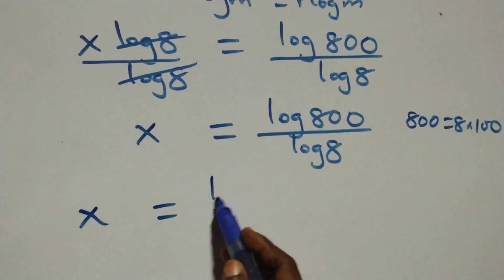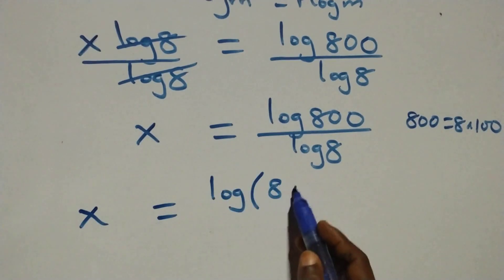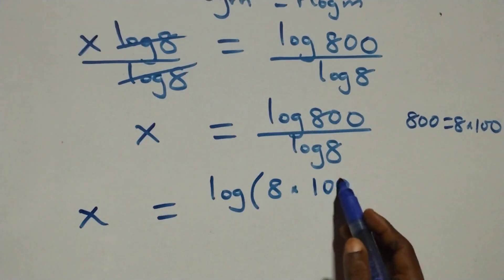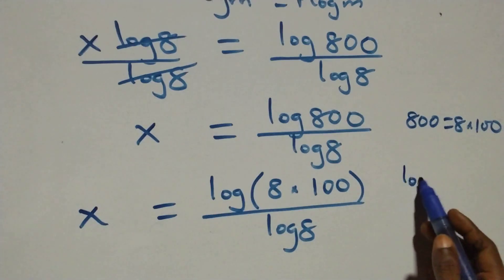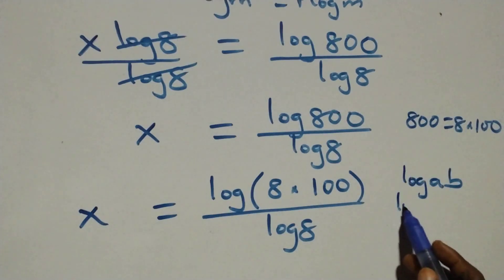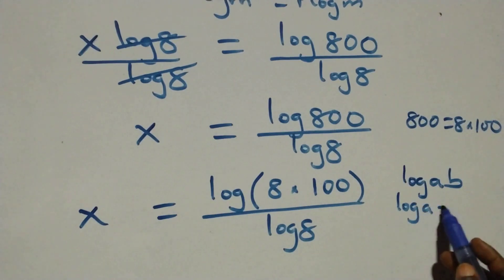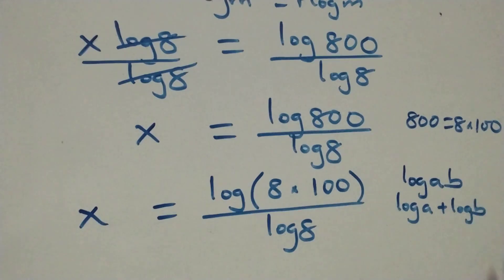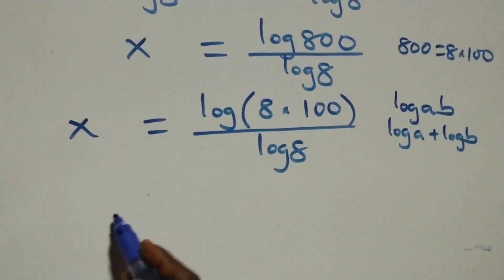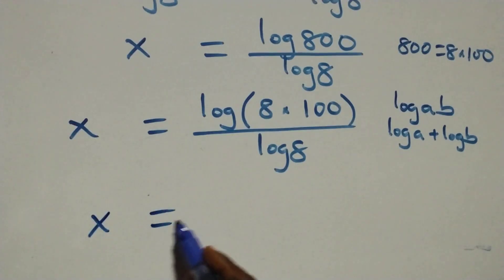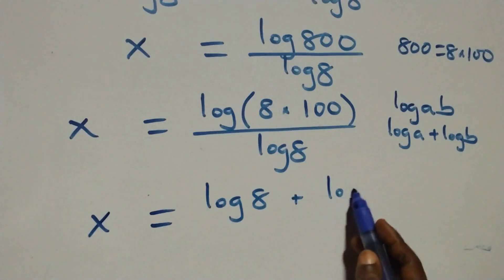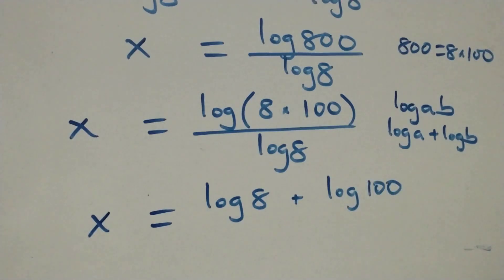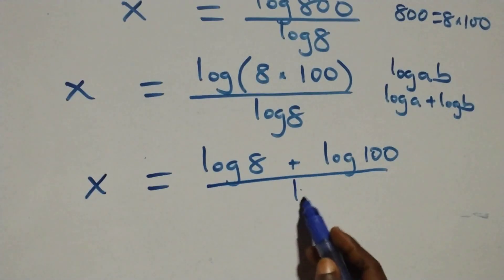This implies the equation becomes x equals log(8 × 100) over log 8. Applying the product rule of logarithms — log(a × b) = log a + log b — we get x equals (log 8 + log 100) over log 8.